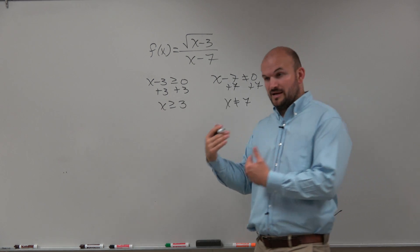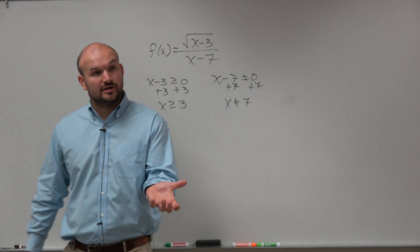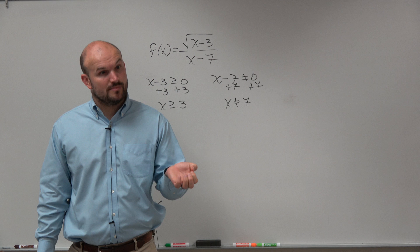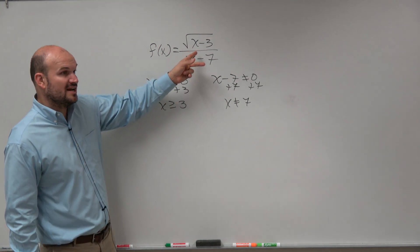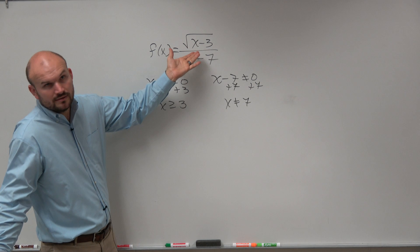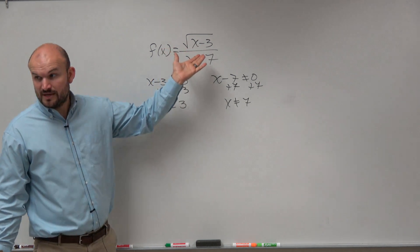So we know that when x is equal to 7, that makes the denominator 0. So that cannot be a value that's in our domain. And we know that for any value that's less than 3, that's going to make my radical negative. Right? Think of like 1. That's going to make the radical negative. That's not in the domain.